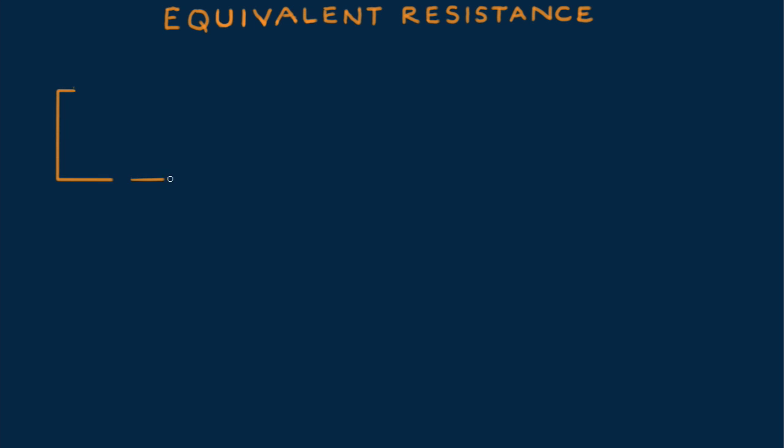Let's consider the resistances in a couple of simple circuits. First, a series circuit with two resistors. These may be lamps or any electrical device. We label their resistances R sub 1 and R sub 2.